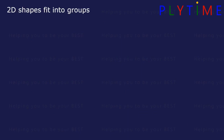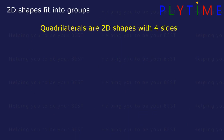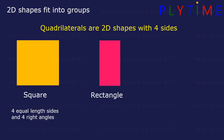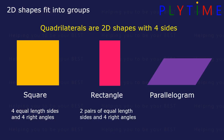2D shapes fit into groups. Quadrilaterals are 2D shapes with four sides. A square has four equal length sides and four right angles. A rectangle has two pairs of equal length sides and four right angles. A parallelogram has two pairs of equal length parallel sides.